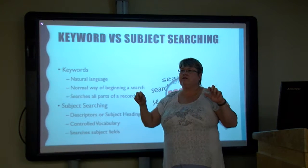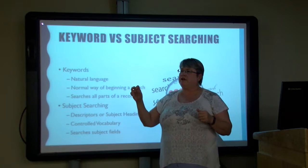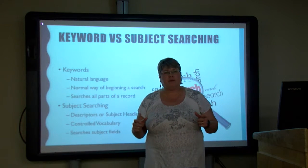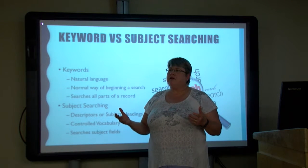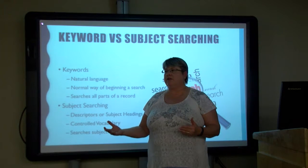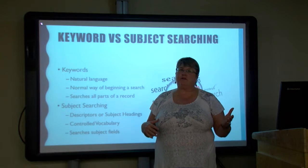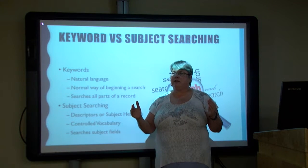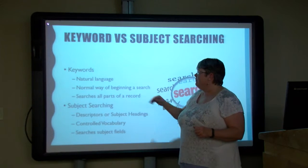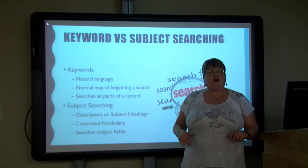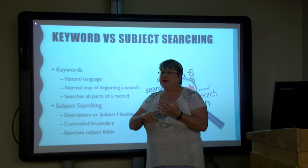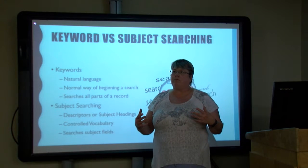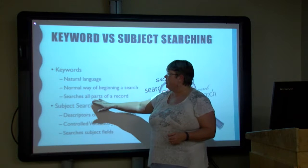The reason I put it in quotations is because that tells the computer to search for those two words together. If I'm in a psychology database, it might also return results for cognitive intelligence — and I don't want cognitive intelligence, I want emotional intelligence. By putting it in quotations, it tells the computer to search for those two words together. Keyword searching is the normal way of beginning a search, and it searches all parts of the record: the title, the author field, the abstract, and sometimes the full text.